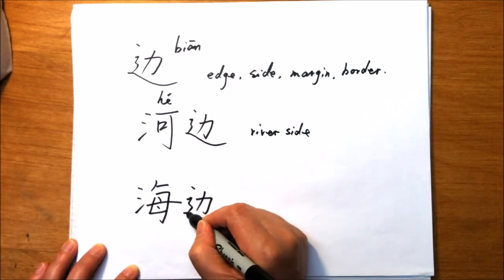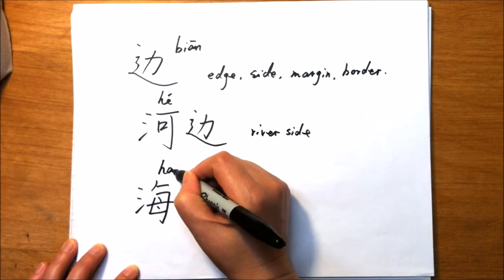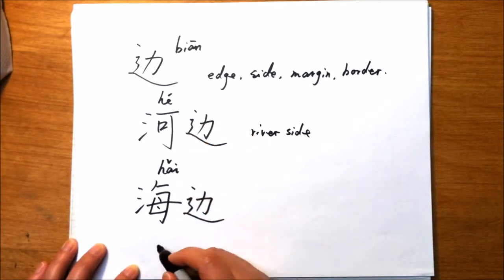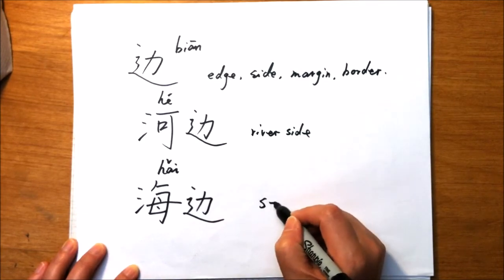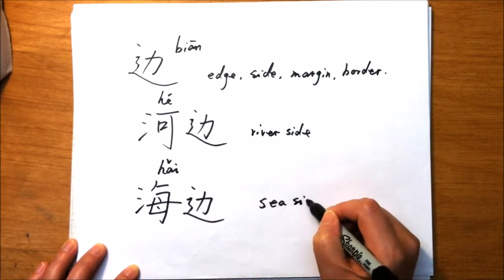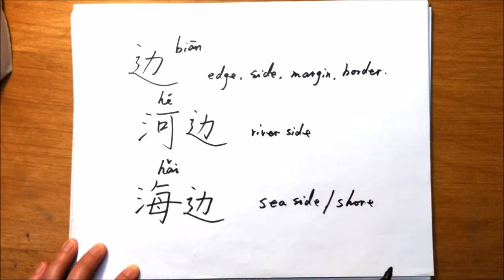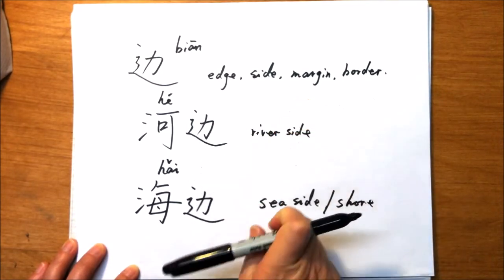海边. 海 means sea. 海边 means seaside or seashore. 河边, 海边.